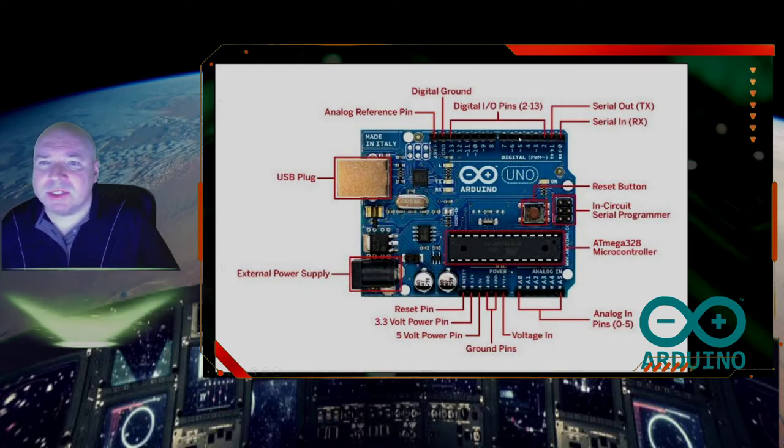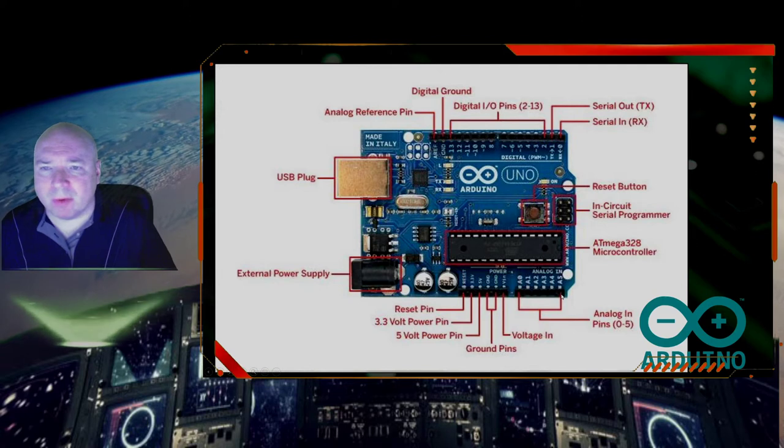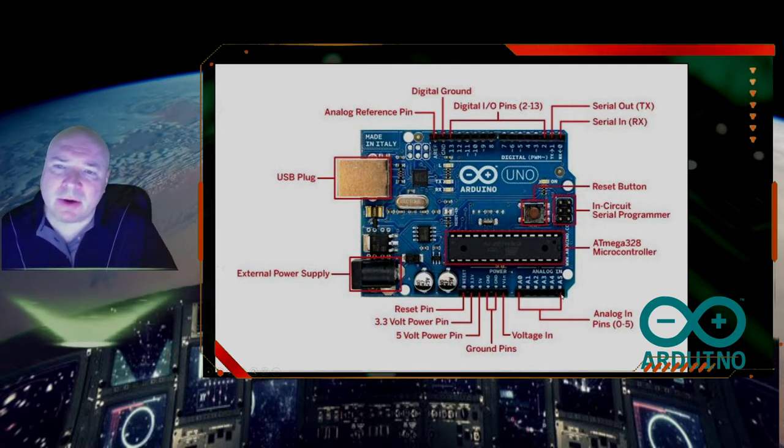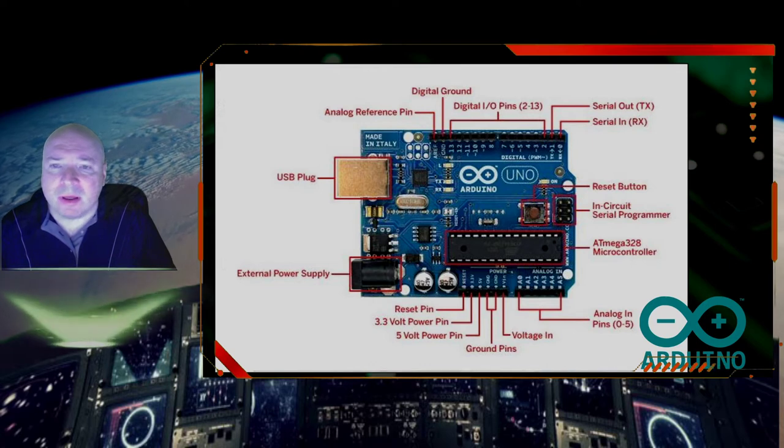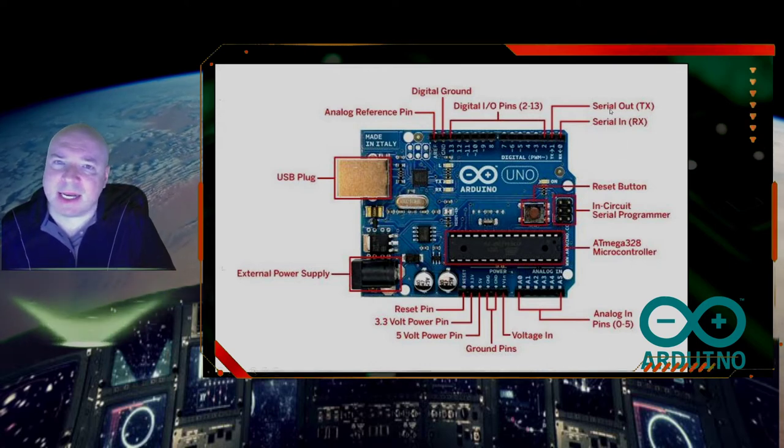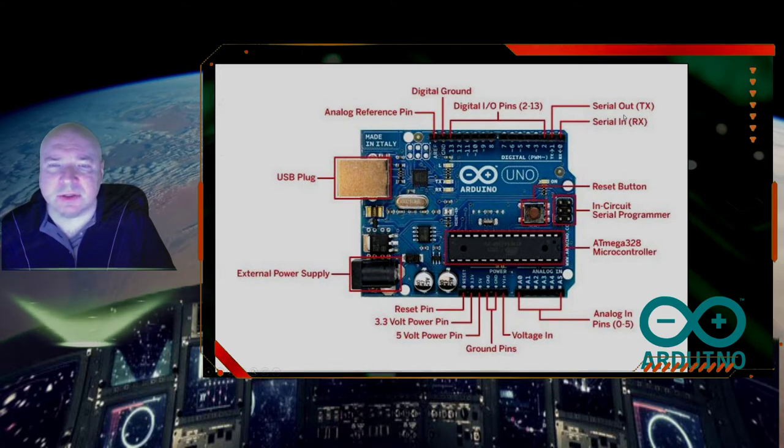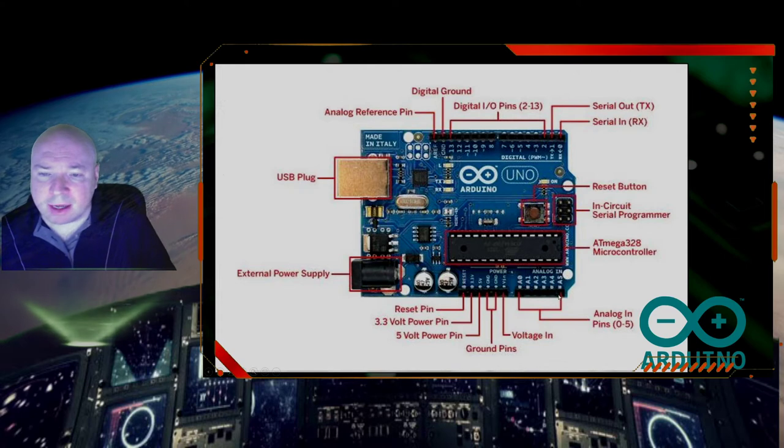We also have all these GPIO pins on either side of our board, and these pins allow us to connect different peripherals, allow us to connect our monitors and our sensors. They also allow us to get data in and out through these serial data ports, and they also have a feature here called analog pins.